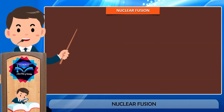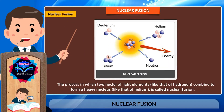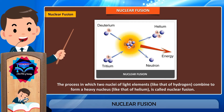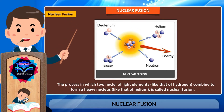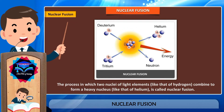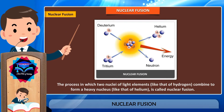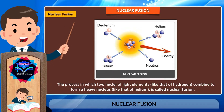Nuclear fusion is the process in which two nuclei of light elements, like that of hydrogen, combine to form a heavy nucleus, like that of helium. This process is called nuclear fusion. The conditions needed for carrying out nuclear fusion are millions of degrees of temperature and millions of pascals of pressure.